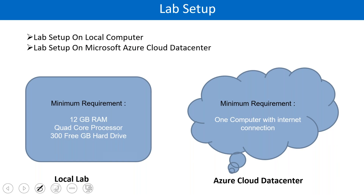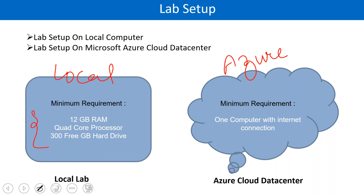You all have to set up your lab, either on your laptop or desktop, or you can do it on Azure — on the cloud. So either it's going to be on local or you do it on Azure. You have to do it so that you will get practical knowledge, and I believe in practical knowledge. For a local lab, you need minimum 12 gigabytes of RAM, a quad-core processor, and 300 GB of hard disk. Otherwise, you can go on Azure.